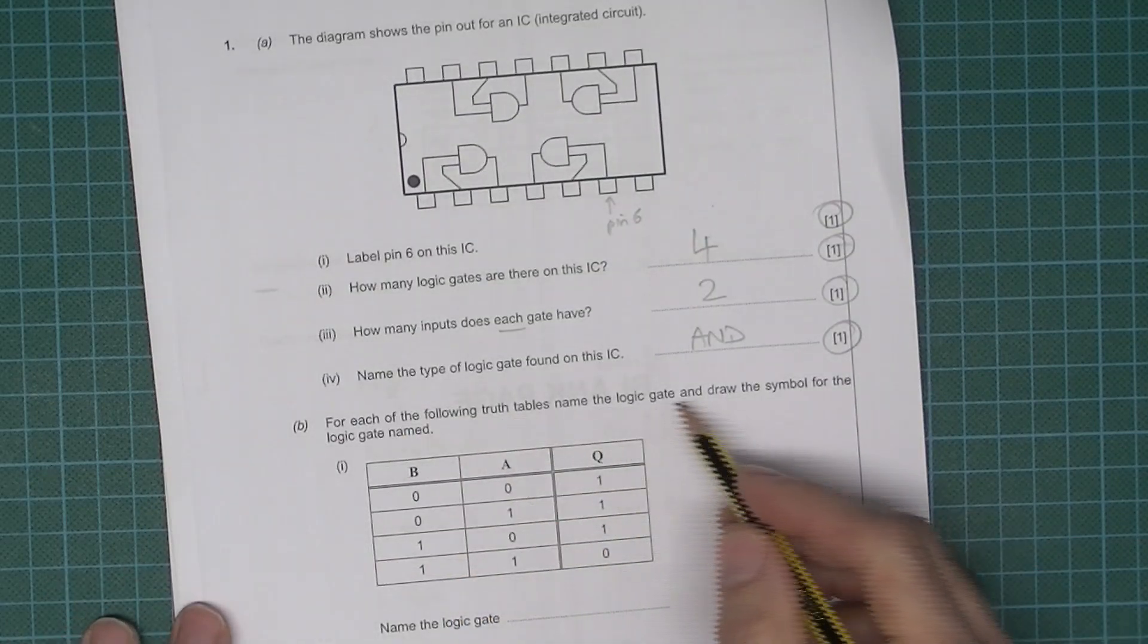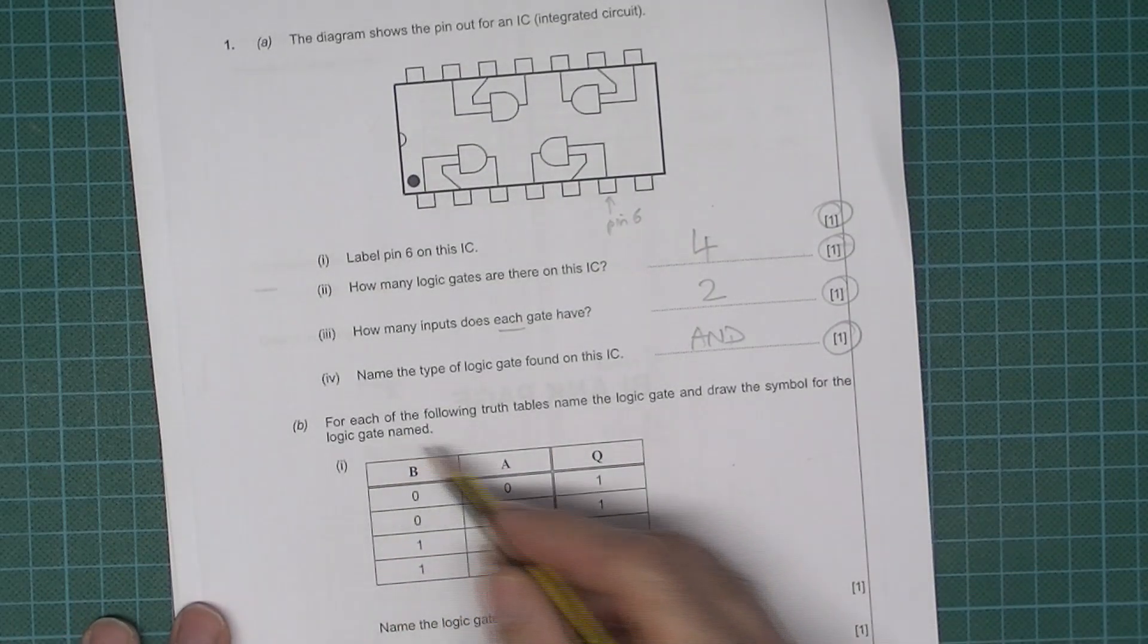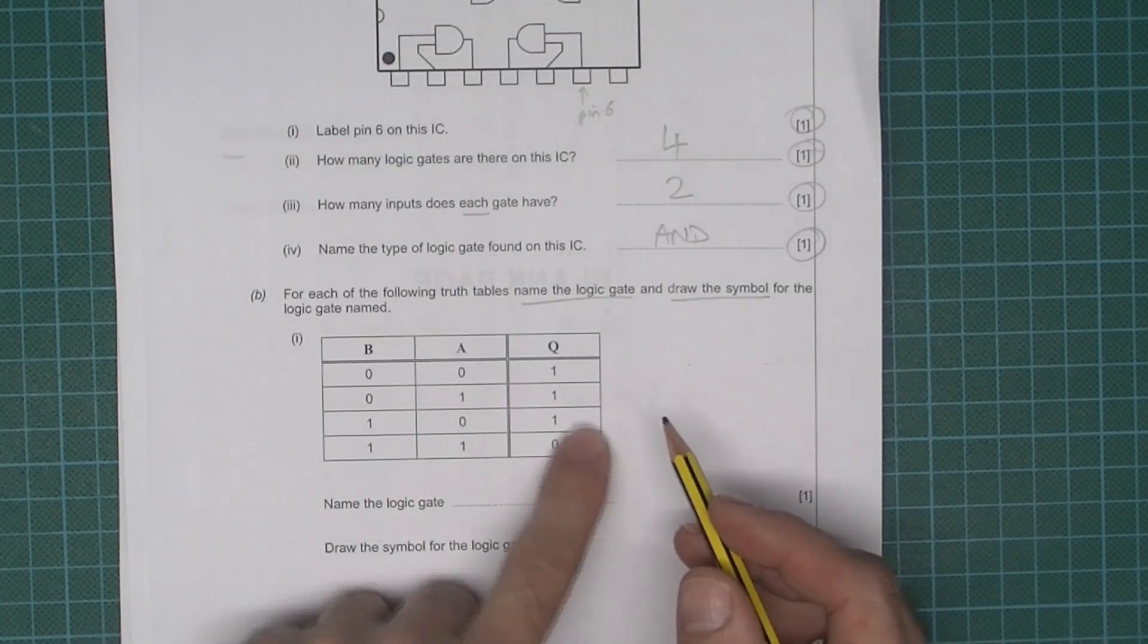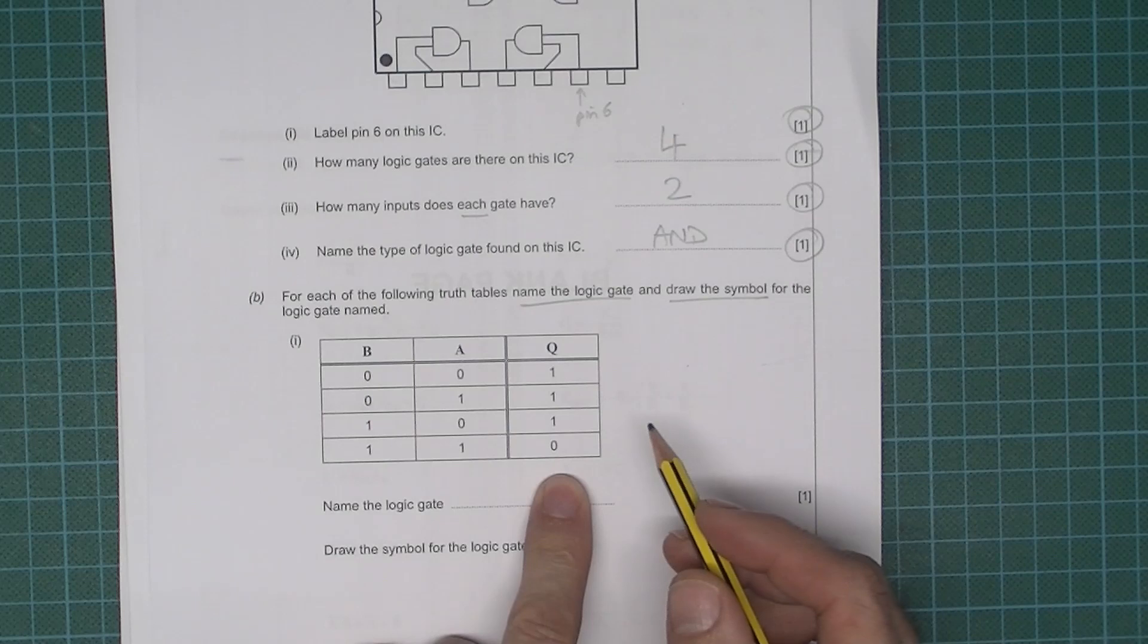It says for each of the following truth tables, name the logic gate and draw the symbol. So name the logic gate and draw the symbol. Hopefully you will recognize this immediately as a NAND gate.